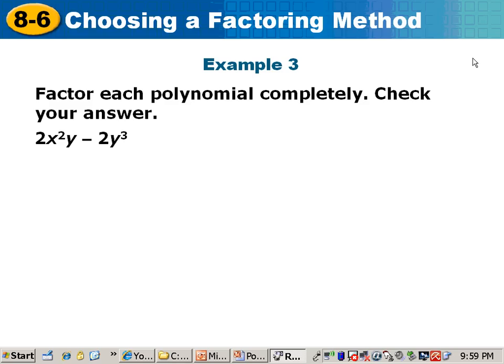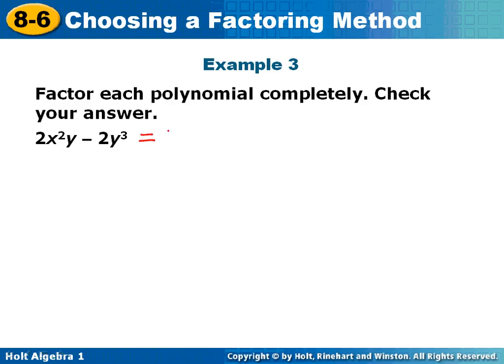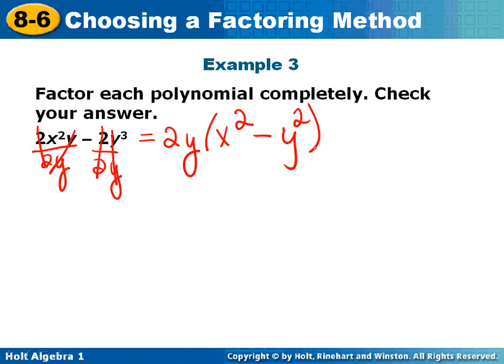Example 3. I need to factor completely, so what I'm going to do first is take out a greatest common factor. They both have 2s and they both have at least one y. If I take out a 2 and a y, that leaves me x squared. If I take out a 2 and a y, that leaves me with y squared. So it's x squared take away y squared.